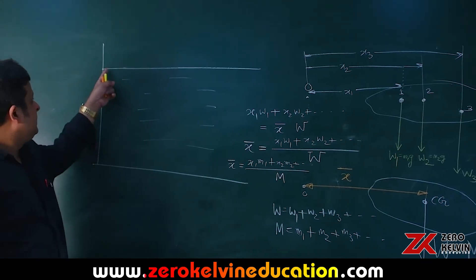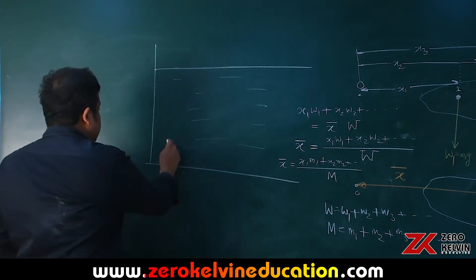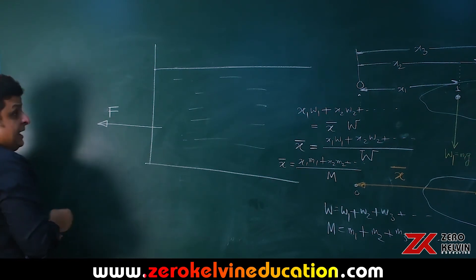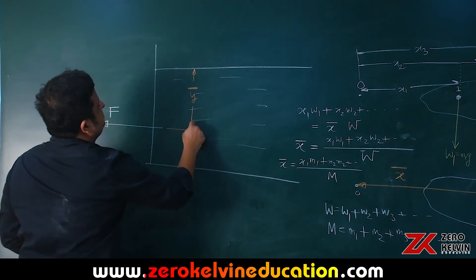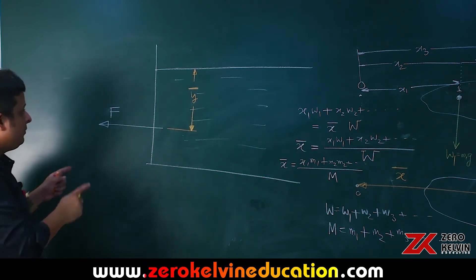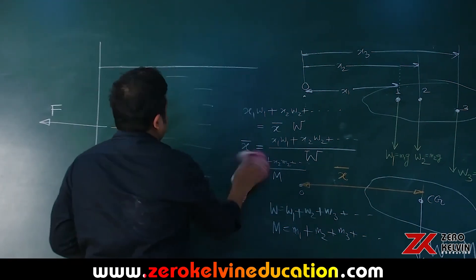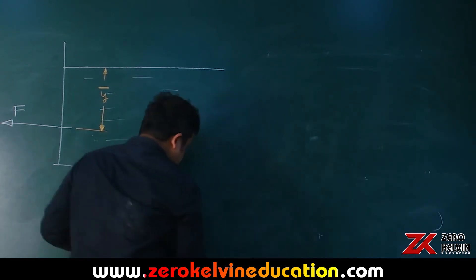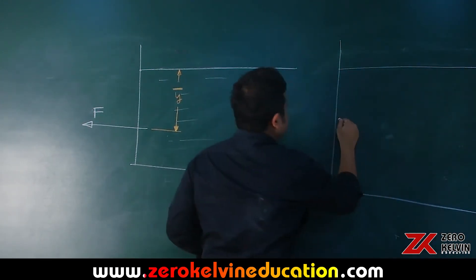Now let us get back to the problem: where is the line of action of the net force acting on the vertical wall? The line of action of the net force has a distance ȳ from the free surface of the liquid. To find ȳ, we will equate torques. Let us draw the distributed forces on the same diagram so we can equate them.